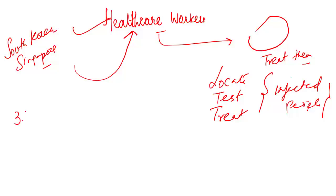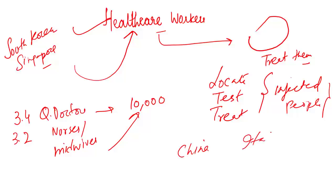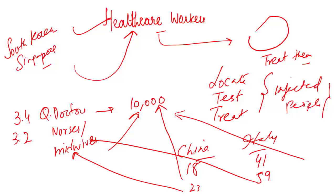Let's look at the data. We have 3.4 qualified doctors for every 10,000 people in India. At the same time, we have 3.2 nurses or midwives per 10,000 population. What about China and Italy? China has 18 doctors per 10,000 population. Italy has 41 doctors per 10,000 population. China has 23 nurses or midwives per 10,000 population. Italy has 59 nurses and midwives per 10,000 population. So what we need? We need more healthcare workers.